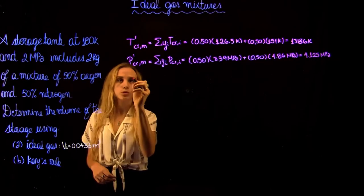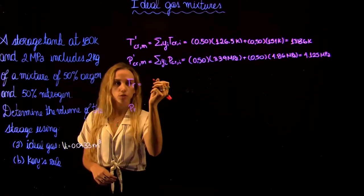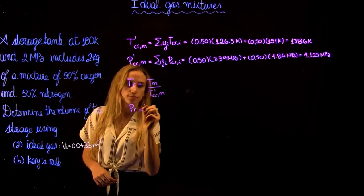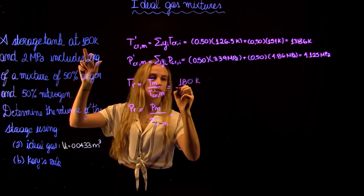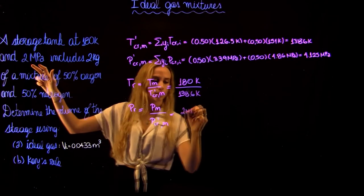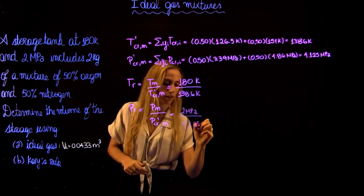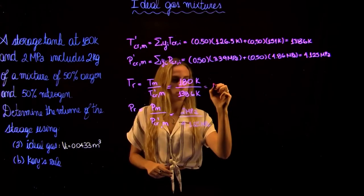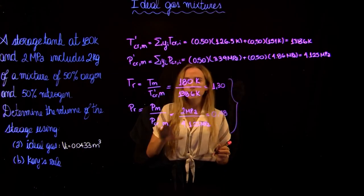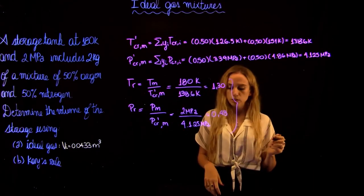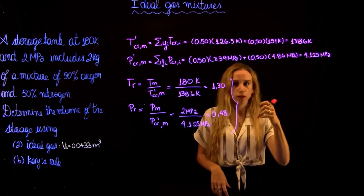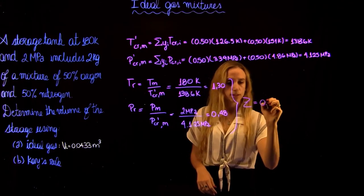Now we find the reduced temperature and reduced pressure, which are the mixture temperature and pressure divided by the pseudocritical values. The reduced temperature is 180 K / 138.16 K = 1.30, and the reduced pressure is 2 MPa / 4.125 MPa = 0.48. With these two values, we go to Figure 3-15. Since the reduced pressure is lower than 1, we use the first figure, and we find a compressibility factor Z of 0.925.